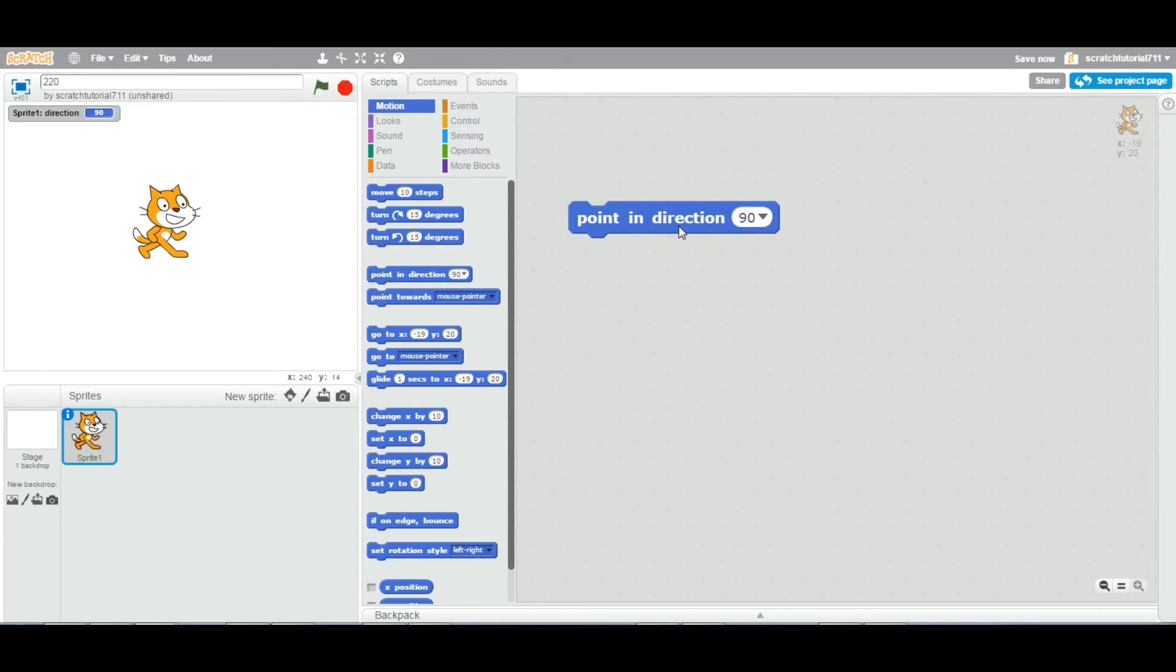As we saw, if you want this cat to point toward 50 degrees, you change this value to 50 and double click. Now the cat is pointing toward 50. If you use a move block and double click the move, the cat will move toward 50 degrees.